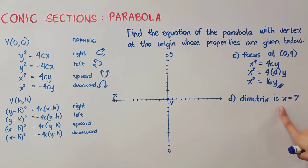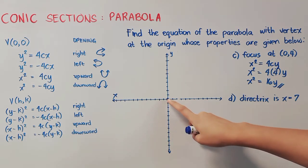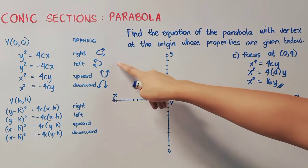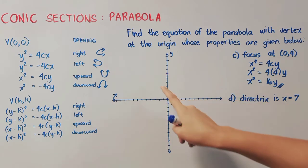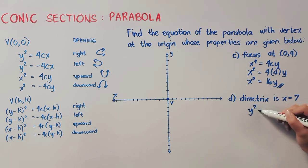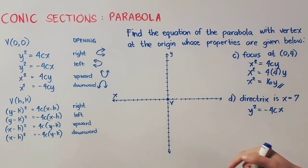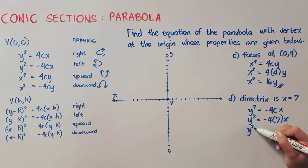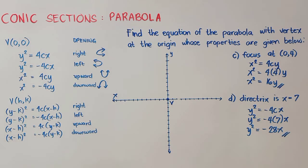Let us now proceed to (d). The directrix is x = 7, so it is found here on the x-axis. If this is our directrix, it means our parabola opens to the left. In that case, we will be using the form y² = −4cx. Our c is the distance from the vertex going to the directrix, so our c is 7. Negative 4 times 7 is equal to −28. Therefore, our final answer is y² = −28x.